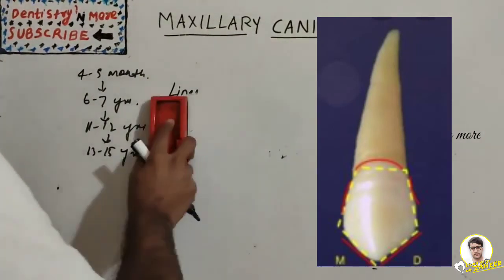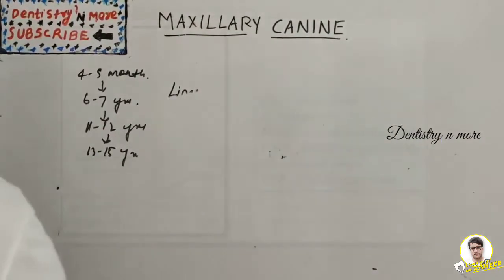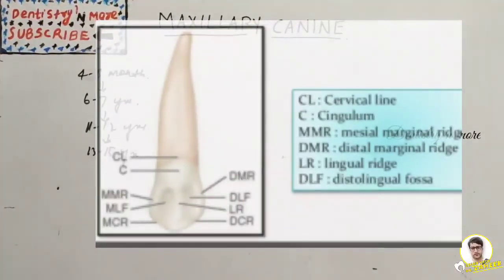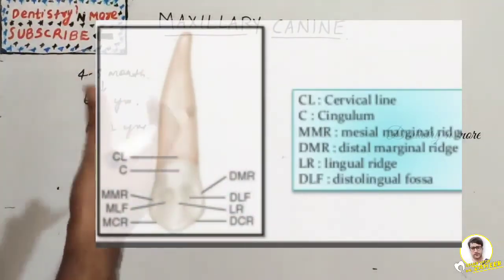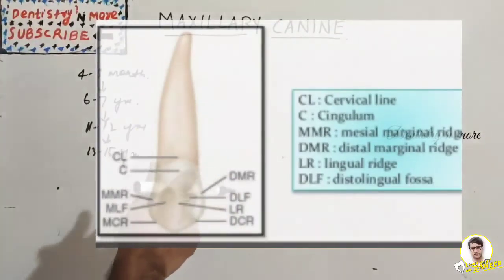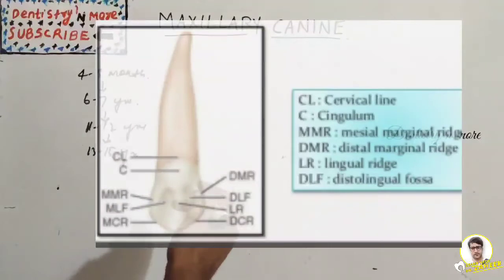From the lingual aspect, the crown and root are narrower lingually. The cingulum is well developed, large, and sometimes pointed like a cusp. The cervical line curves asymmetrically toward the apex with a slight offset to the distal. A well-developed lingual ridge divides the mesial and distal lingual fossae. Key landmarks include the cingulum, mesial and distal marginal ridges, distal lingual fossa, mesiolingual fossa, and mesial and distal cuspal ridges.